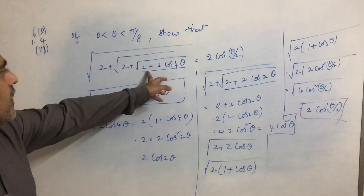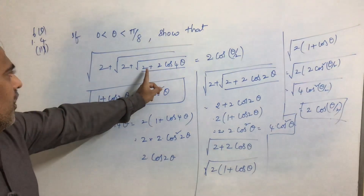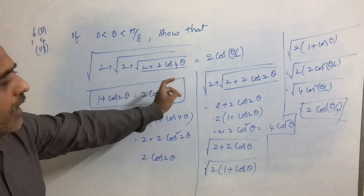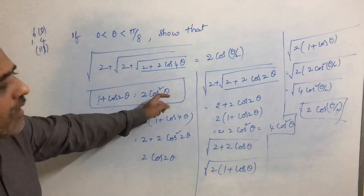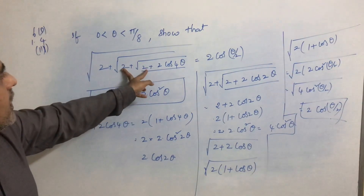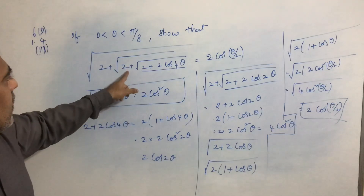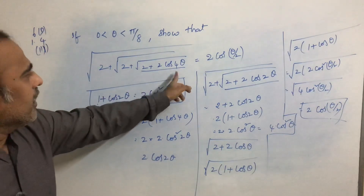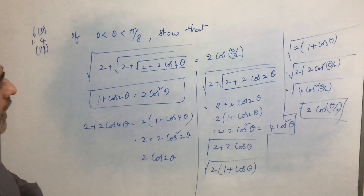The trick is: take the last innermost term, simplify it, and substitute that value back. Then take the next term, simplify, and substitute again. We need to do this recursively.